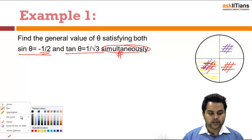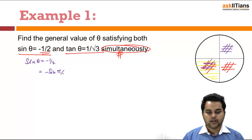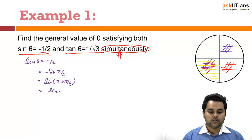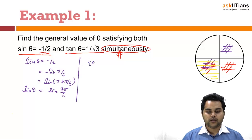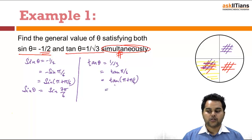Now solving further: sin θ = -1/2 gives minus of sin(π/6), which in the third quadrant can be written as sin(π + π/6) = sin(7π/6). For the second equation, tan θ = 1/√3, which in the first quadrant is tan(π/6), and in the third quadrant — where tan is positive — it can be written as tan(π + π/6), giving tan θ = tan(7π/6).